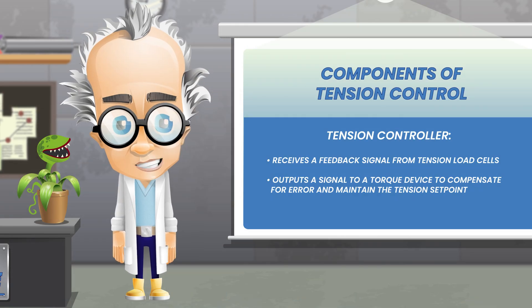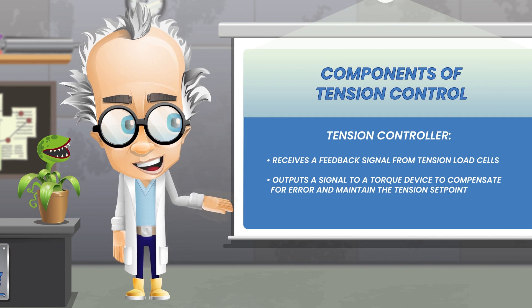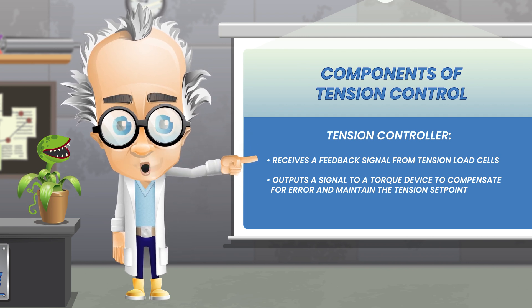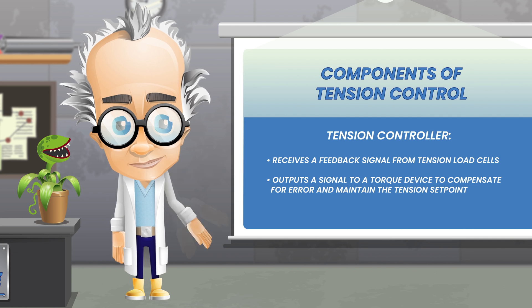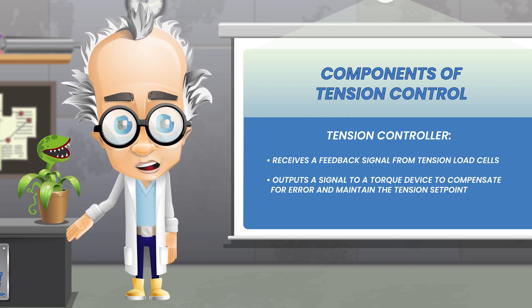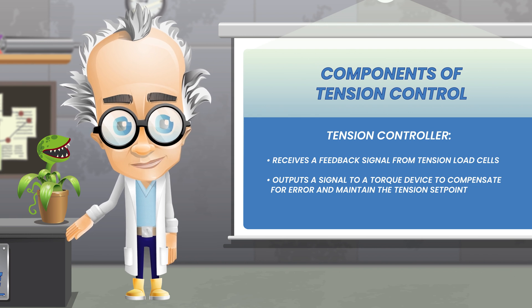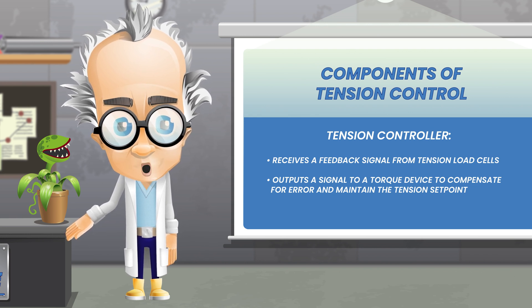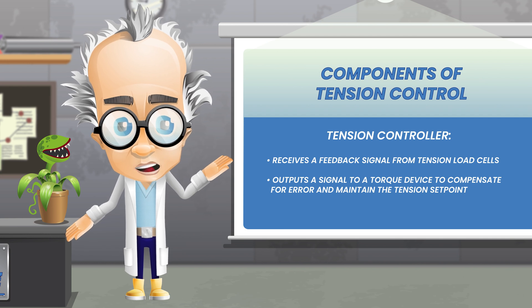During operation, a tension controller uses the feedback signal from the load cells to adjust the torque device and maintain a desired tension setpoint. If the tension reference signal from the load cell is too low, the controller will automatically increase torque output to compensate and increase tension. If the tension is too high, the controller reduces torque to achieve the desired setpoint.